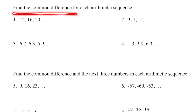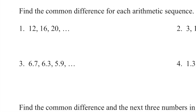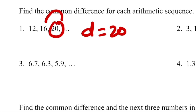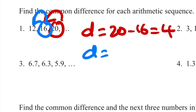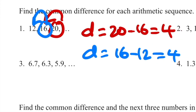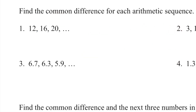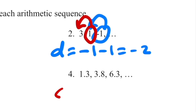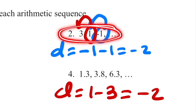The first question is: find the common difference for each sequence. We're looking for the value of d. To find d, you take the number on the right and subtract the left. So d equals 20 minus 16, or 16 minus 12. This d value has to be constant.